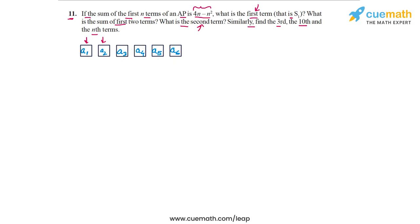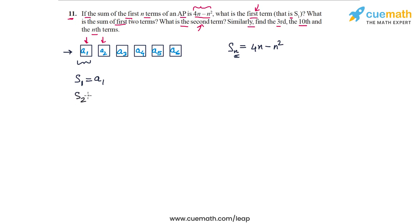We are given that the expression for Sn is 4n minus n squared. If you observe this figure carefully, what is the sum of just the first term? If you take only one term, that's only A1. So the sum of the first one term is the same as the first term itself, which means that if you substitute n equal to 1 in this expression, you will get the first term. Because S1 equals A1, S2 equals A1 plus A2, S3 equals A1 plus A2 plus A3, and this pattern continues. This is how we can calculate the first term.